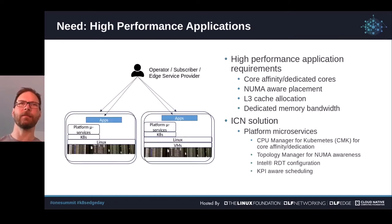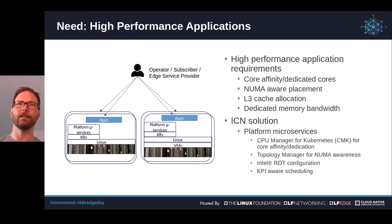High performance applications — in the cloud-native setting, careful management of shared resources may be required for deterministic performance, high throughput, and reduced tail latency, particularly for performance-sensitive network functions. Included in ICN are Topology Management for NUMA-aware placement, CPU Manager for Kubernetes (CMK) for CPU pinning and isolation, and Intel Quick Assist Technology (QAT) for hardware acceleration of cryptographic algorithms. The ICN roadmap also includes Intel Resource Director Technology (RDT) for control of cache allocation and memory bandwidth.